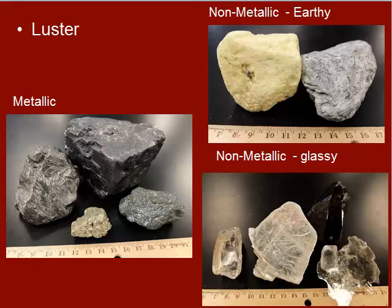It might help you to watch the lab prep video posted in the lab materials. Some of the non-metallic things you'll see might be earthy, kind of a dull look, powdery, or it might look glassy and shiny. Some students can confuse the glassy look — the shininess — with the metallic look. It's very important to know that metallic means it looks like metal. That's the main thing.